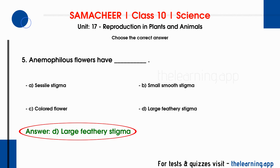In anemophilous flowers, pollen grains are very large and produced in large amounts. The stigma has a hairy or feathery structure to trap pollen grains carried by wind. The large feathery stigma acts as a trap for pollen grains. So the correct answer is option D, large feathery stigma.